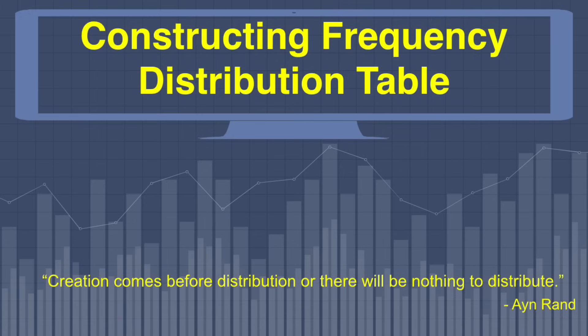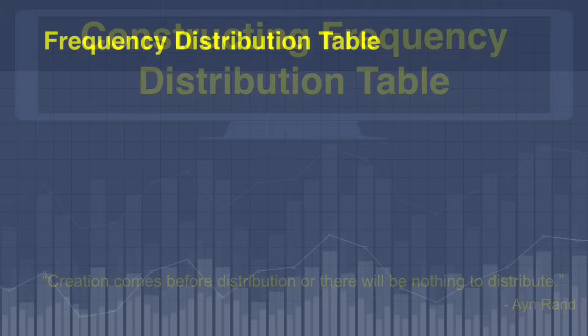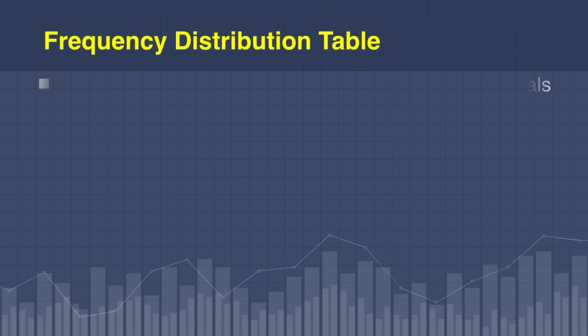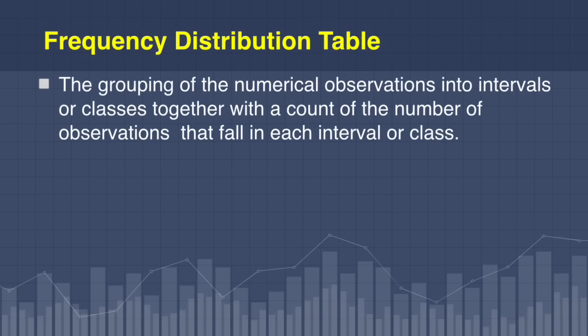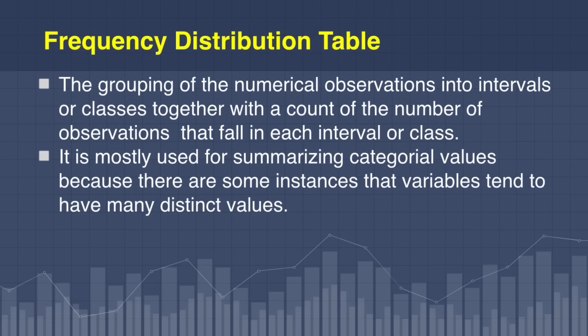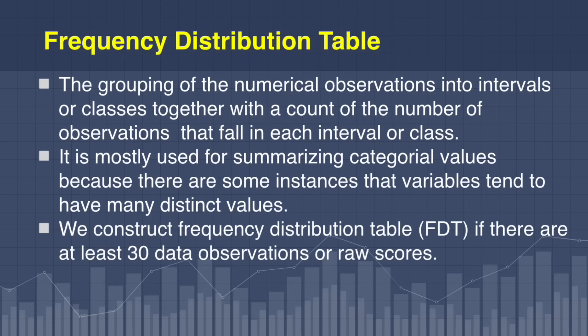Let us define first what is a Frequency Distribution Table. A Frequency Distribution Table is the grouping of numerical observations into intervals or classes, together with the count of the number of observations that fall in each interval or class. It is mostly used for summarizing categorical values because there are some instances where variables tend to have many distinct values.